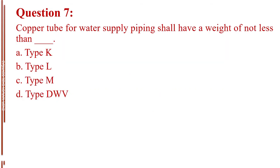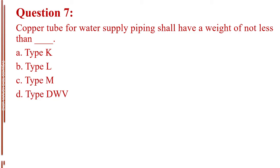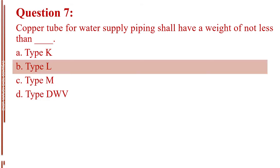Question number 7. Copper tube for water supply piping shall have a weight of not less than blank. Letter A, type K. Letter B, type L. Letter C, type M. Letter D, type DWV. The answer is Letter B, type L.